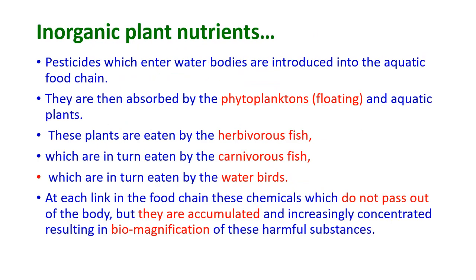Pesticides that enter water bodies are introduced into the aquatic food chain. They are absorbed by phytoplanktons and aquatic plants. Phytoplanktons are floating micro-organisms. These are eaten by herbivorous fish, which are eaten by carnivorous fish, which are eaten by water birds. At each link in this food chain, these chemicals are not excreted but accumulate, becoming increasingly concentrated, resulting in biomagnification of harmful substances.